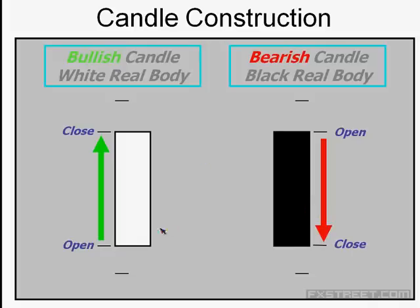The name for this price move — open to close, whether positive or negative — is real body. The Japanese strategists and traders many centuries ago decided that the difference between the open and the close was the most important price activity in the market. They said it was the essence of market psychology. To understand the market's real psychology and direction, you really need to know where the market opened and where it closed. This is, in essence, the market's commitment to a price point.